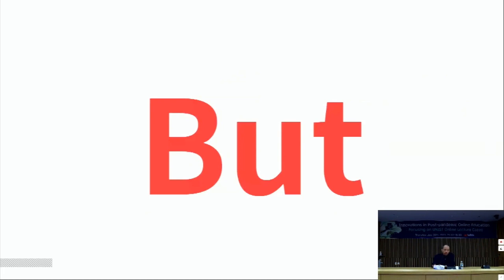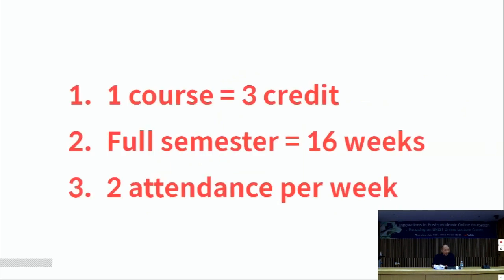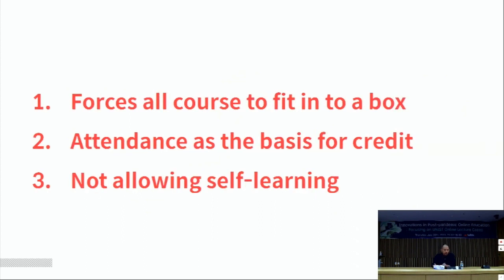This part is about the credit system in Korea. At least in UNIST, in most cases, one course has to give three credits, run for a full semester of 16 weeks, and requires two contact sessions per week. This, in turn, forces all courses to fit into a box of the same shape and size. You cannot create a more demanding course or a smaller course.